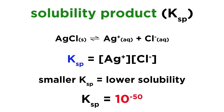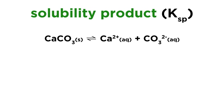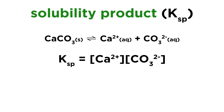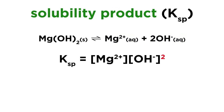Let's make sure we can write these solubility products for various equilibria. Take something like calcium carbonate. First, we must write out the complete equilibrium. Upon dissociating, this will form a calcium ion and a carbonate ion. Therefore, the solubility product will be equal to the product of these two ion concentrations.